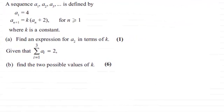Hi there. Now in this question, we're given a sequence a1, a2, a3, defined by the first term a1 equaling 4, and the n plus 1th term, a_{n+1}, is equal to k times the nth term, a_n plus 2, for n greater than or equal to 1, where k is a constant.